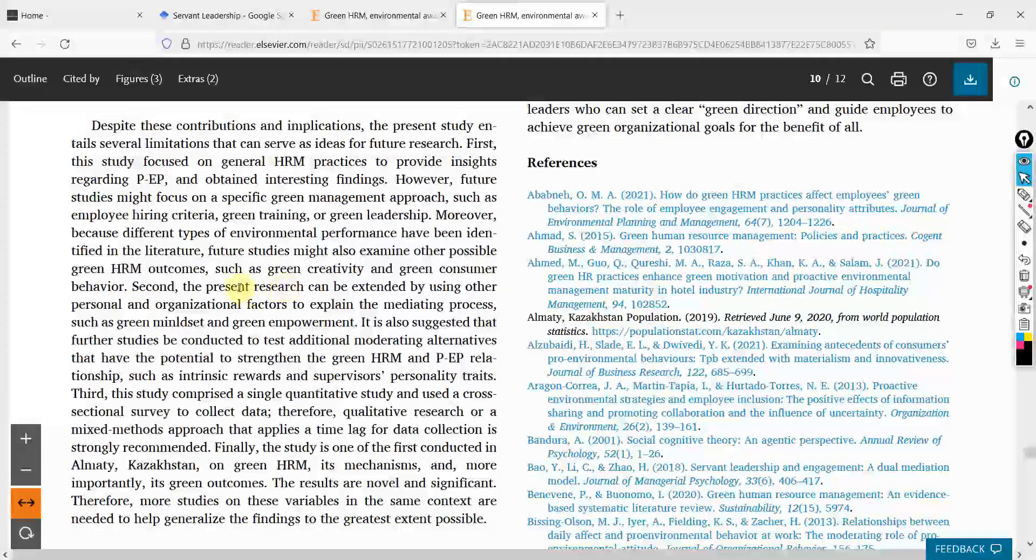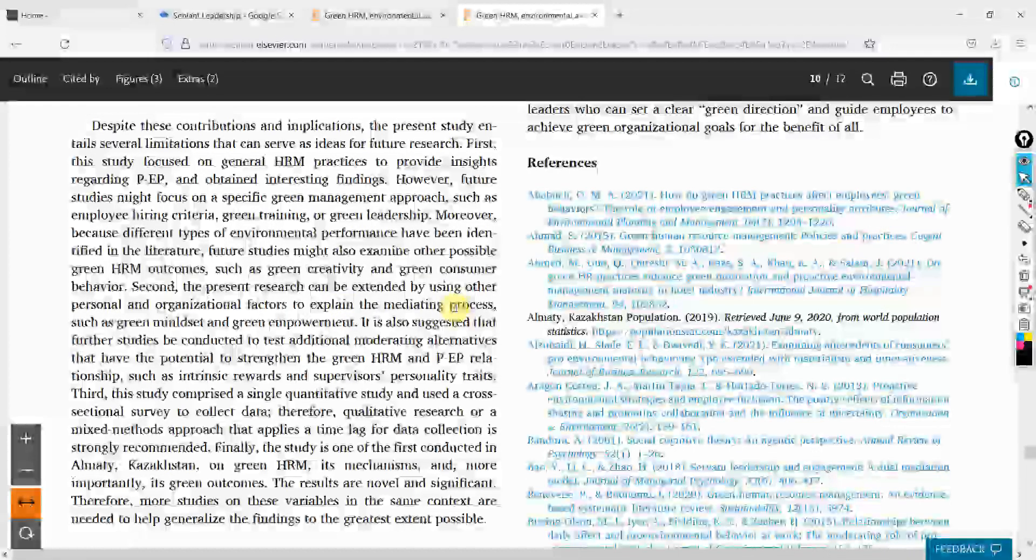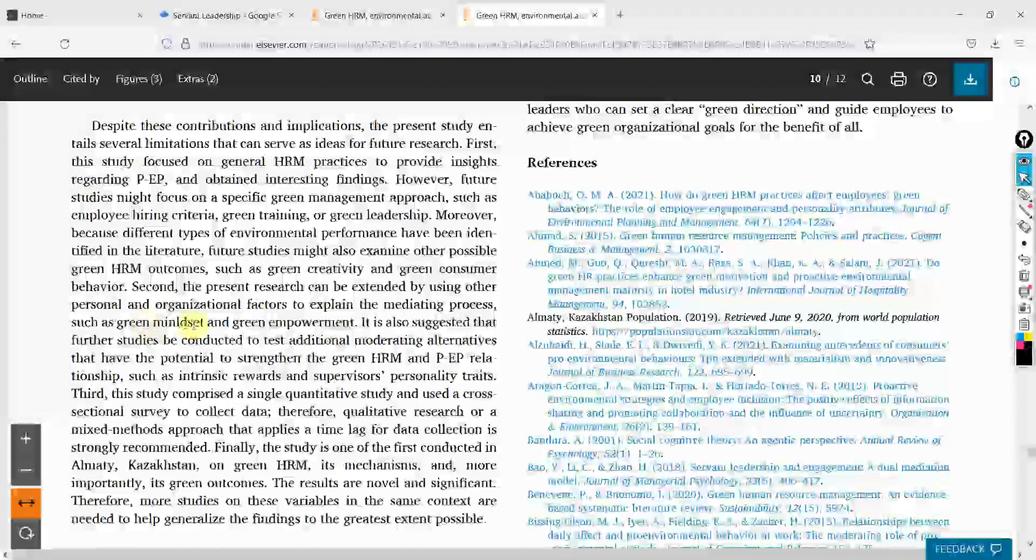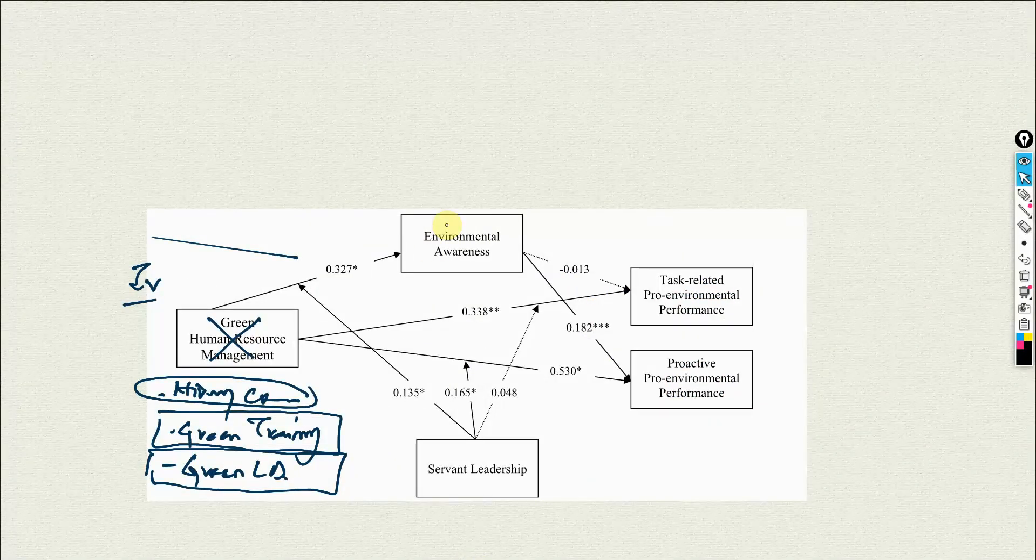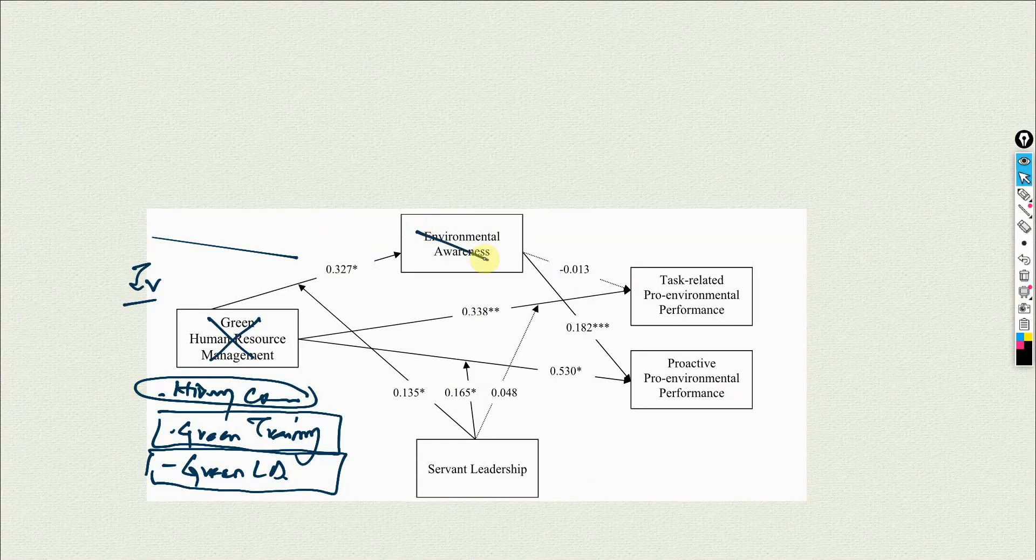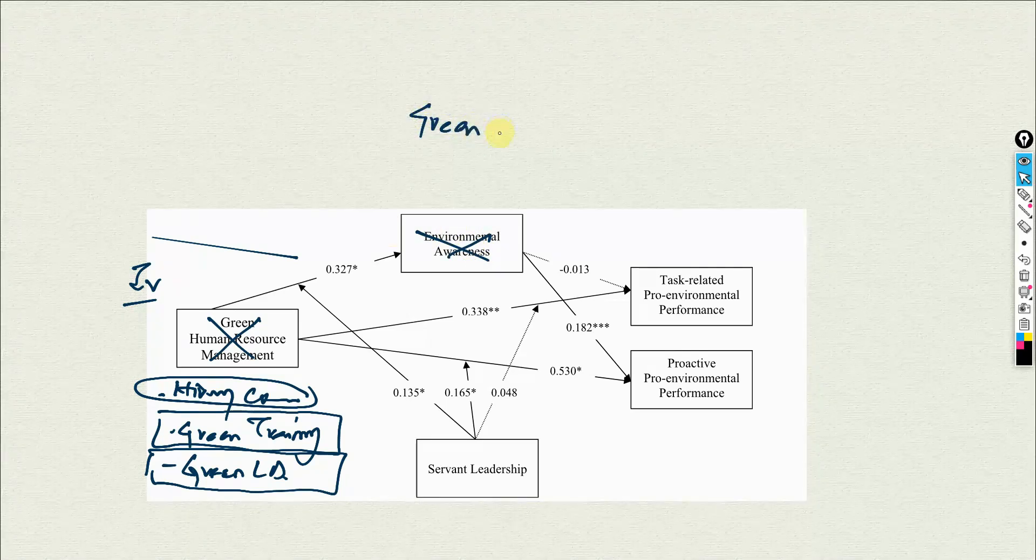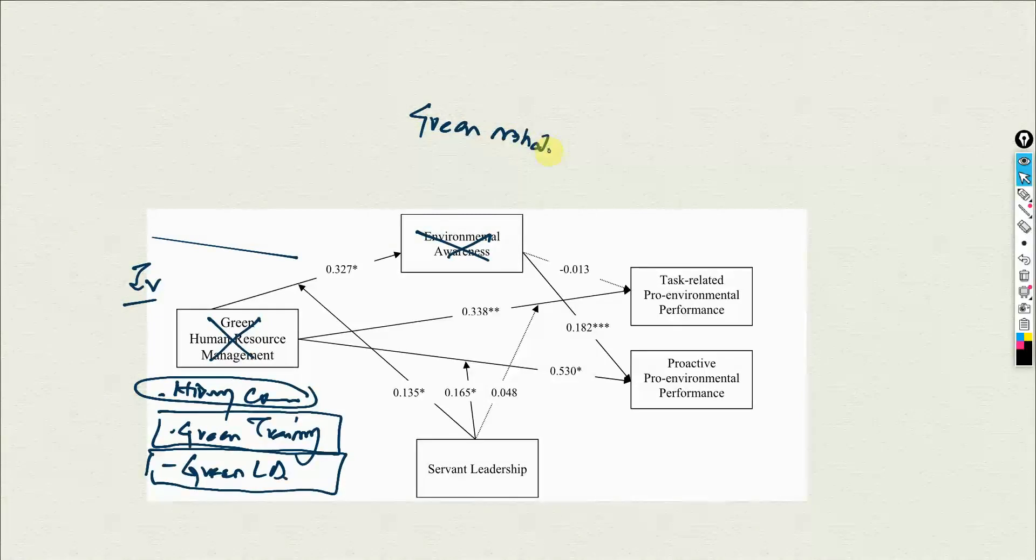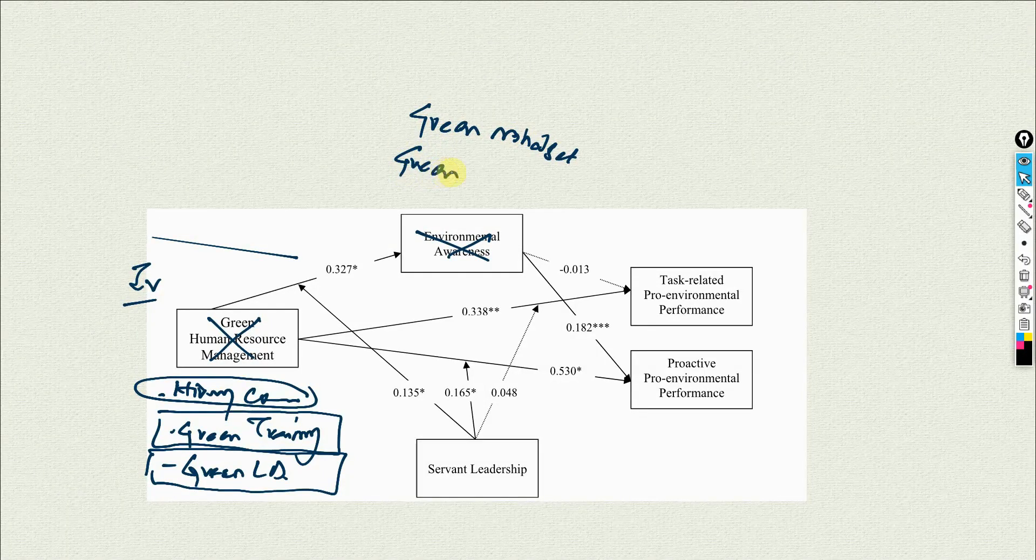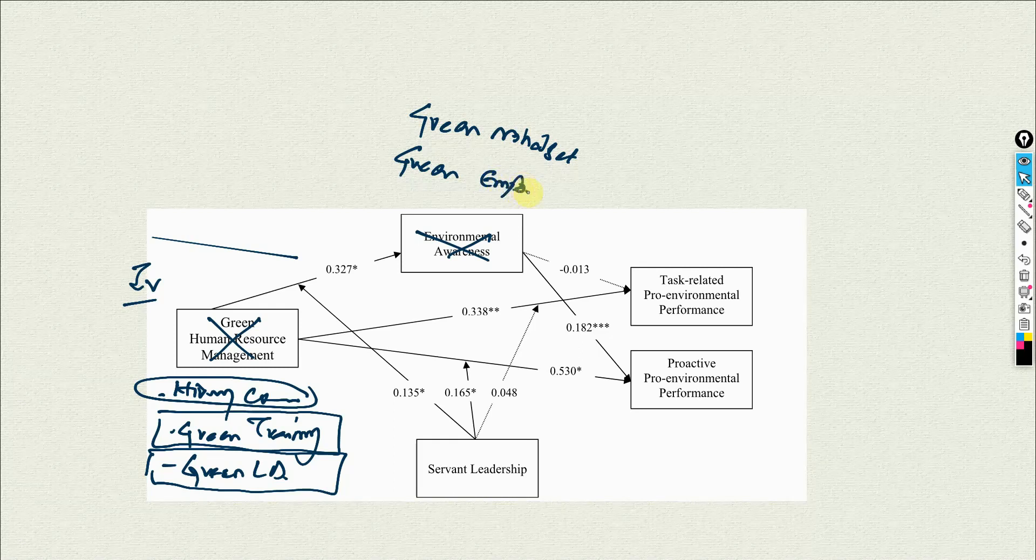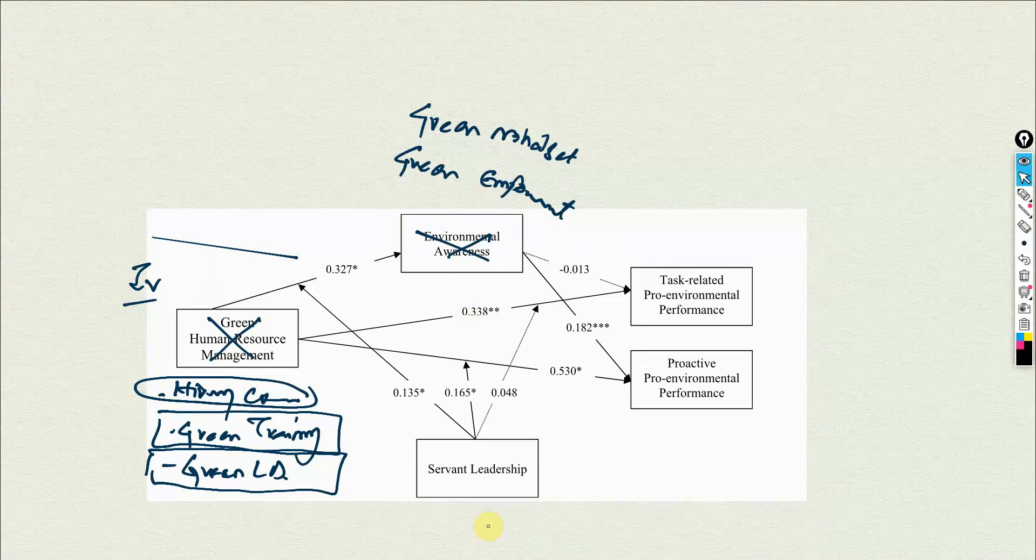Now let's look at the other ones. Second, the present research can be extended using other personal and organizational factors to explain the mediating process, such as green mindset and green empowerment. So here let's say we can remove this and we can have green mindset and green empowerment.